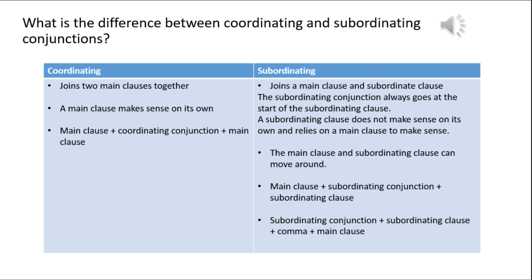Coordinating conjunctions join together two main clauses, and the two main clauses make sense by themselves. In comparison, subordinating conjunctions join together a main clause and a subordinating clause. The subordinating conjunction must always go at the start of the subordinating clause. What is special here is that the subordinating clause and the main clause can switch round, as you can see in the example below.